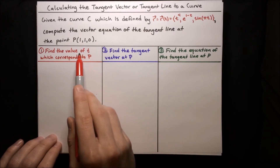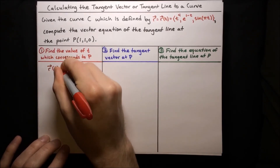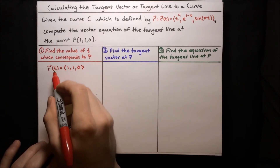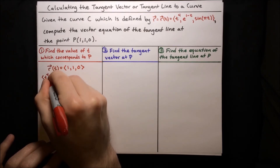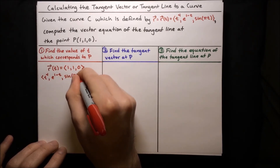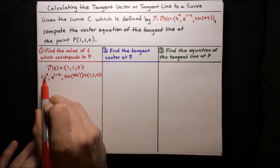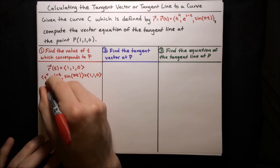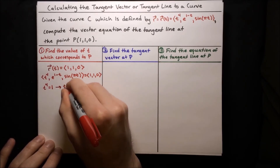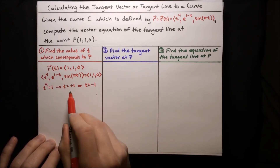The first step is to find the value of t which corresponds to P. We want to find the value of t such that r of t equals the vector (1, 1, 0). Substituting in for r of t: t to the fourth, e to the one minus t, and sine of pi t, all equal to (1, 1, 0). Looking at the first components, t to the fourth equals one, which gives us two possibilities: t equals positive one or t equals negative one. We need to check the other components to see which possibility is correct.